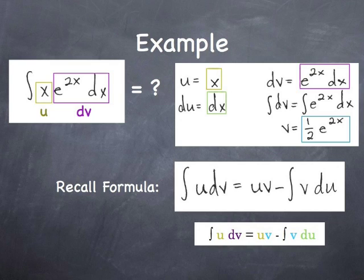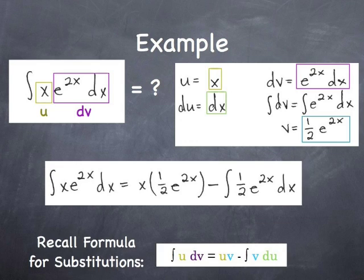Here we go. We just substitute into the formula for integration by parts. We see our u times v minus the integral of v du.